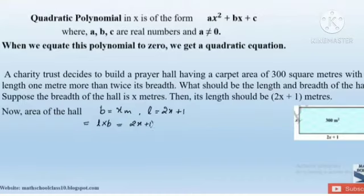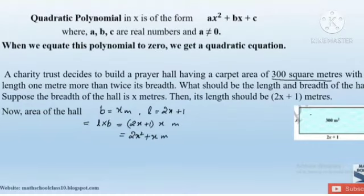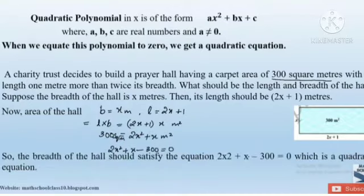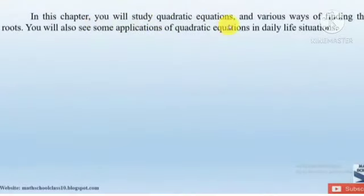We need to multiply x into 2x plus 1, which gives 2x squared plus x. The area of the hall is 300 square meters, so 2x squared plus x equals 300. Rearranging, we get 2x squared plus x minus 300 equal to 0. This is a quadratic equation. In this chapter you will study quadratic equations, various ways of finding the roots, and some applications of quadratic equations in daily life situations.